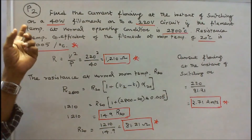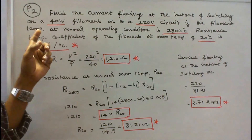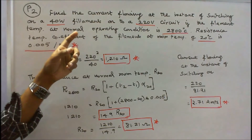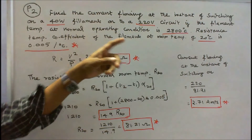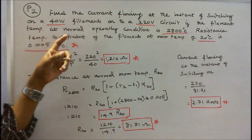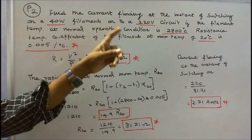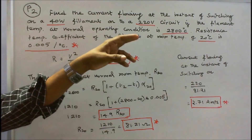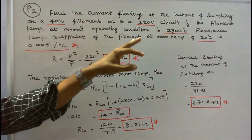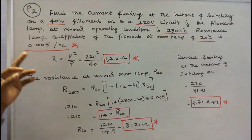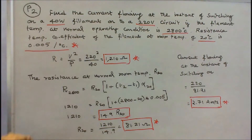Problem number 2. Find the current flowing at the instant of switching on a 40 watt filament onto a 220 volt circuit if the filament temperature at normal operating condition is 2800 degree centigrade. The resistance temperature coefficient of the filament at room temperature of 20 degree centigrade is 0.005 per degree centigrade.